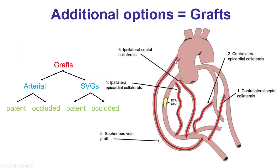Specifically for bypass grafts, they can be arterial or venous, open or occluded, and that can offer an option — but it all depends on the morphology of the graft, whether the graft is open, and whether there are any additional septal collaterals or not.